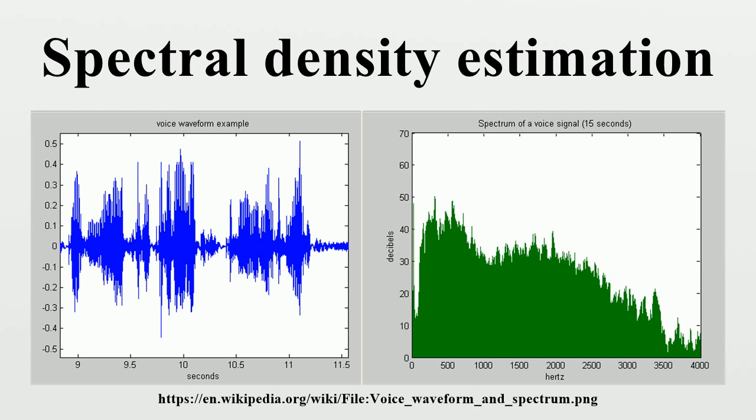Following is a partial list of non-parametric spectral density estimation techniques: Periodogram - the basic modulus squared of the discrete Fourier transform. Bartlett's method is the average of the periodograms taken of multiple segments of the signal to reduce variance of the spectral density estimate.